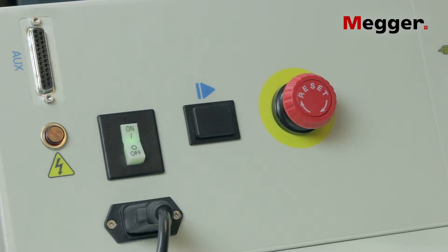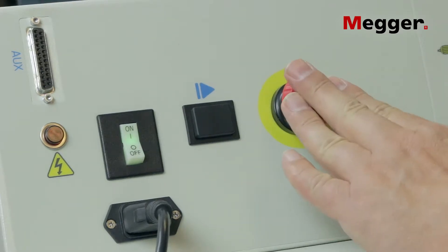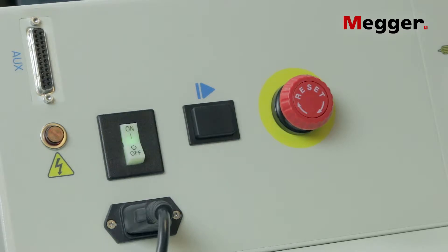If for any reason you need to quickly disconnect power to the test leads, press the equipment stop button. This can be reset by turning it.